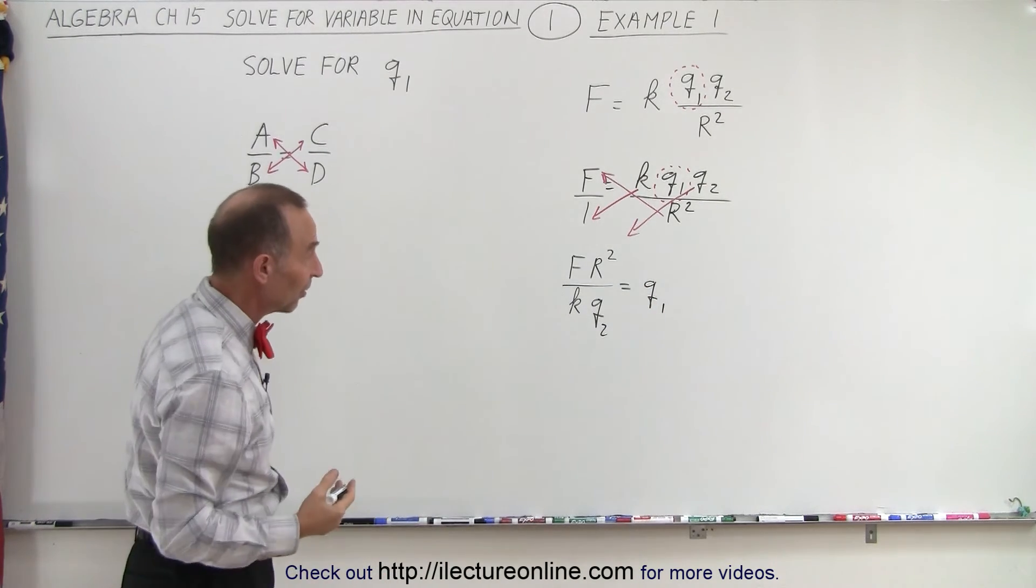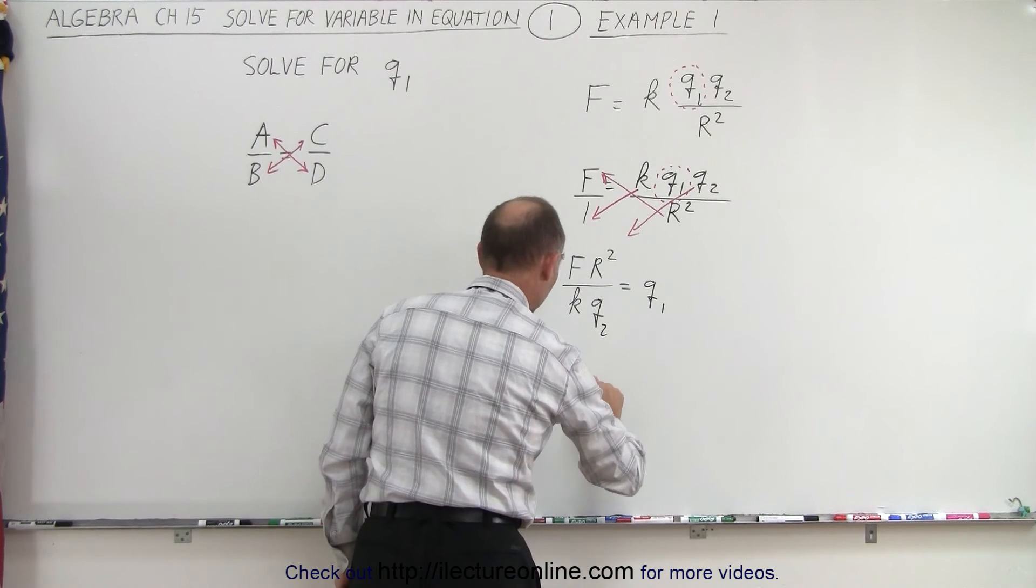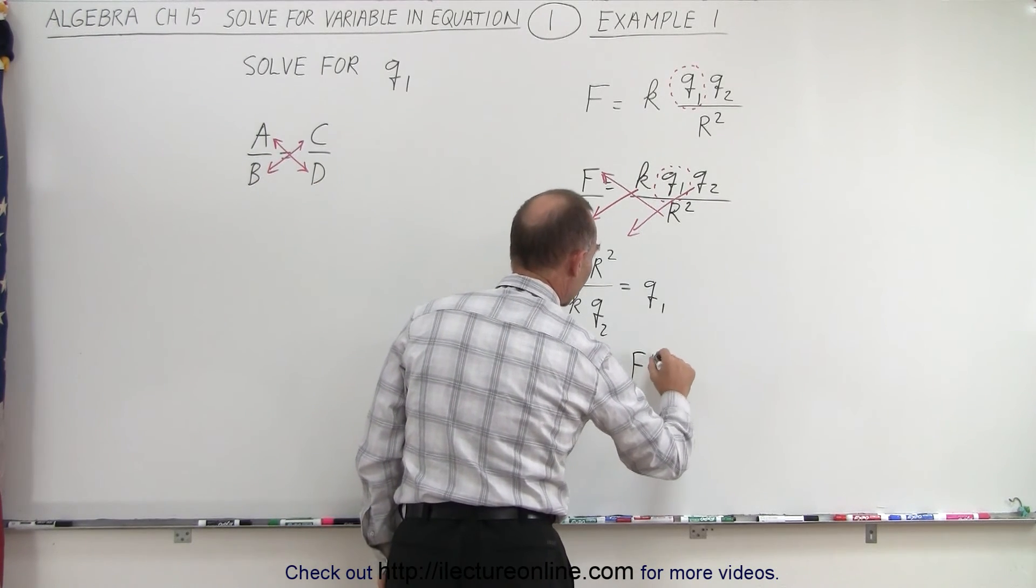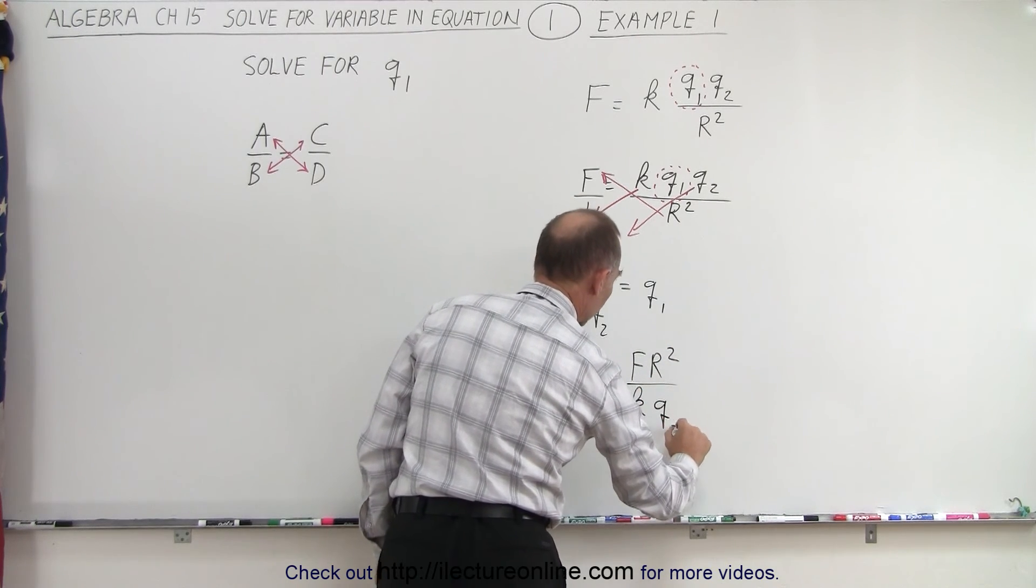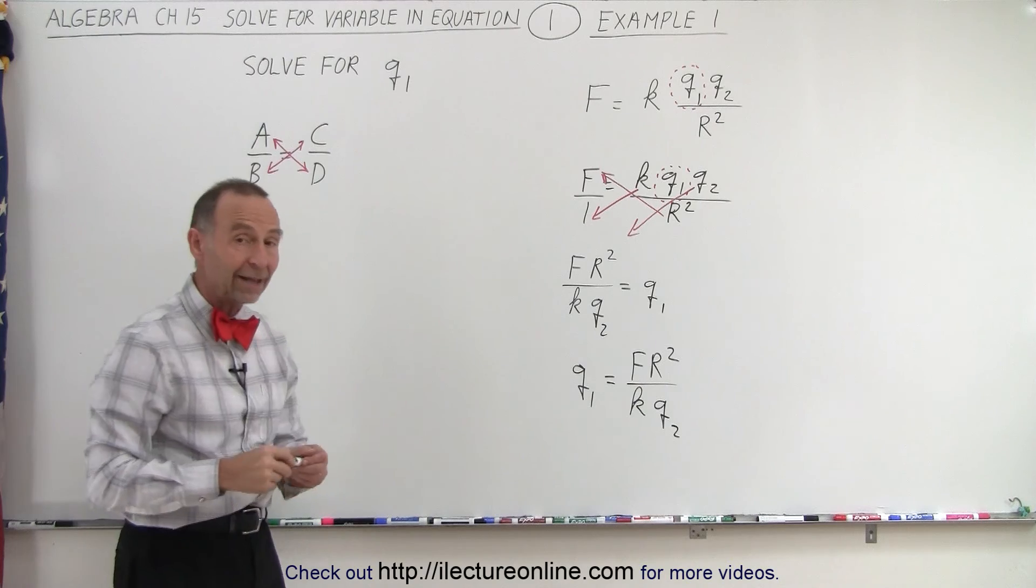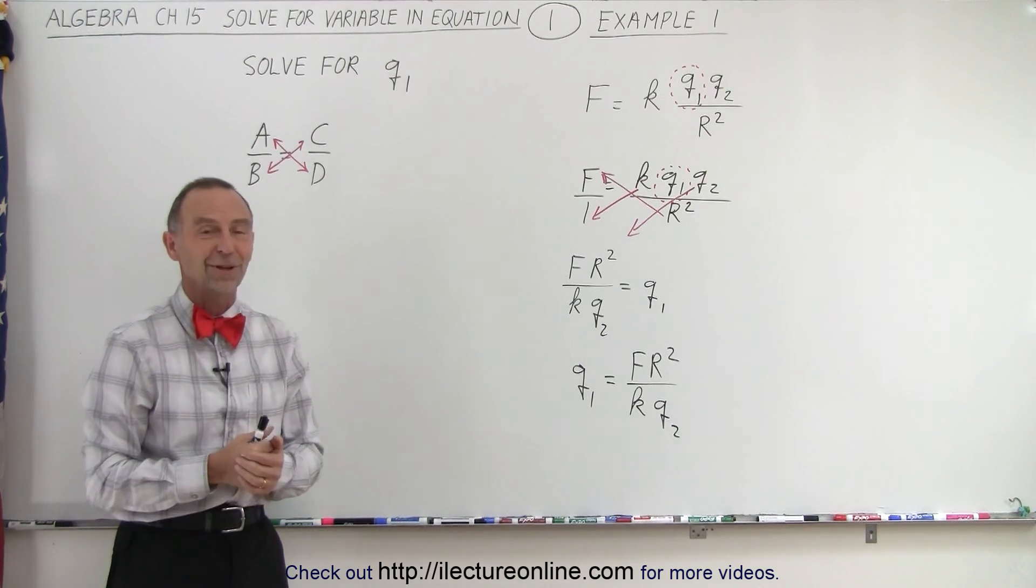And that's, in essence, now we've solved the problem. Of course, we can rewrite it with Q1 on the left side. So Q1 is therefore equal to F times R squared divided by K times Q2. And so that's how we isolate and solve for one of the variables in an example like this. That's how it's done.